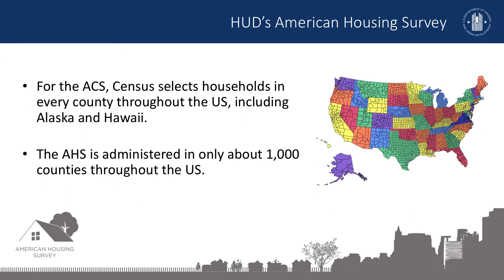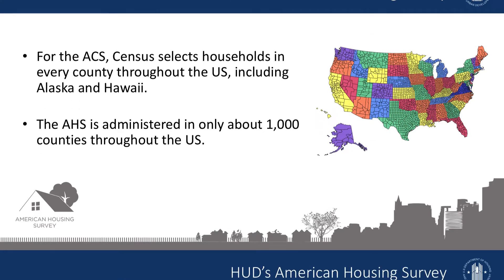For the ACS, Census selects households in every county throughout the U.S., including Alaska and Hawaii. Because of its small sample size, the AHS is not conducted in every county throughout the U.S. In fact, the AHS is administered in only about 1,000 counties throughout the U.S. These 1,000 counties are selected to be representative of all other counties.